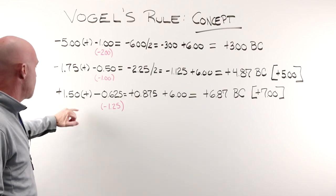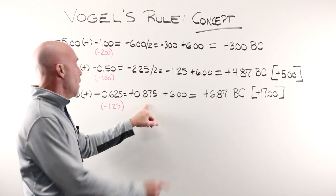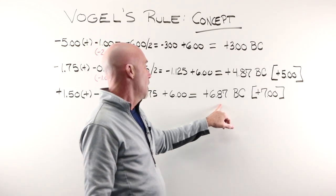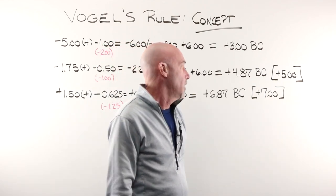For a plus prescription, we take the spherical equivalent, which is our plus .875. We do not take half of that amount. We simply add it to our six for a base curve of plus 6.87 or seven.